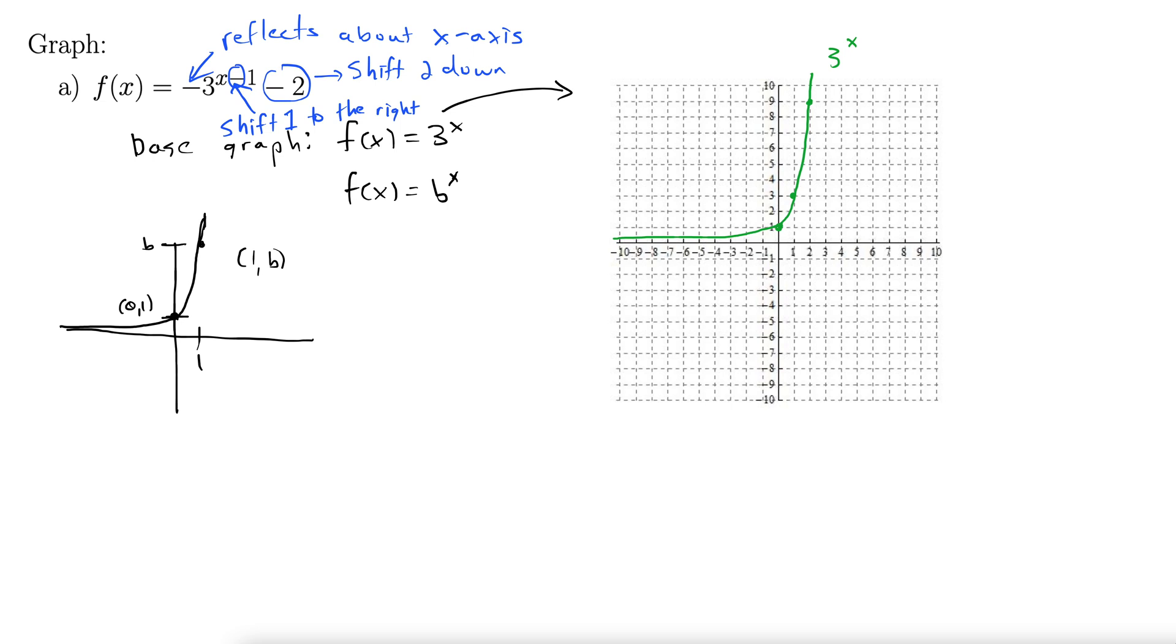So let's see here. So let's reflect it first. I'm going to stick with green here. Let's do our reflection about the x-axis. That just takes everything up here and reflects them down. So this 0, 1 is going to come down here to 0, negative 1. 1, 3 is going to become 1, negative 3. 2, 9 becomes 2, negative 9. And it goes along like that. Hopefully yours is straighter than mine. It shouldn't be all wavy like that. Kind of hard to draw on this. So now we have negative 3 to the x. We've reflected about the x-axis.